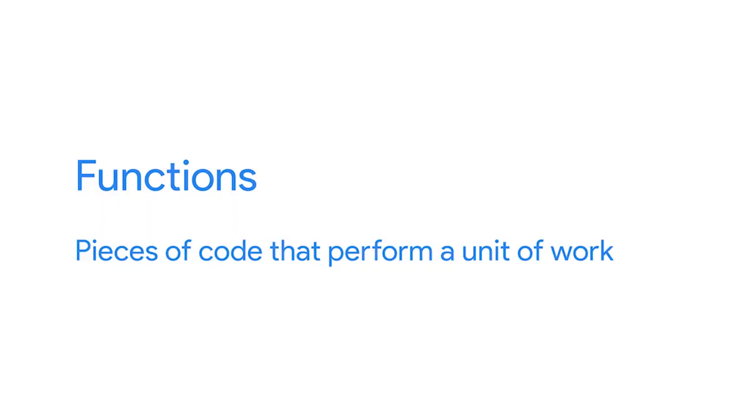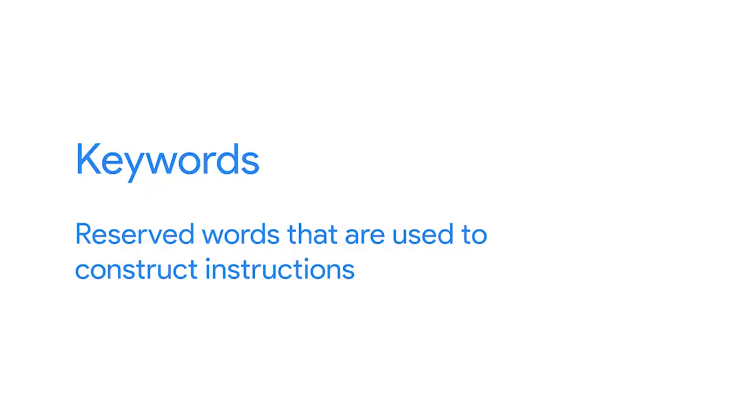So what are functions and keywords? Functions are pieces of code that perform a unit of work. We'll talk a lot more about functions later on, and you'll even learn how to write your own. Keywords are reserved words that are used to construct instructions. These words are the core part of the language and can only be used in specific ways. Some examples include if, while, and for. We'll explain all of those and a bunch more later in the course.